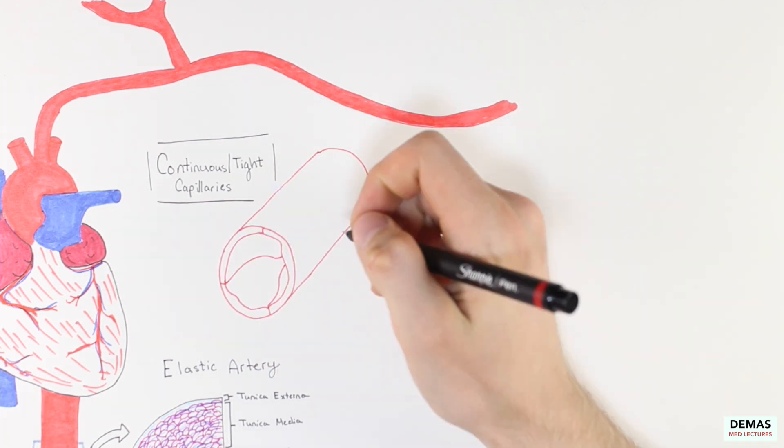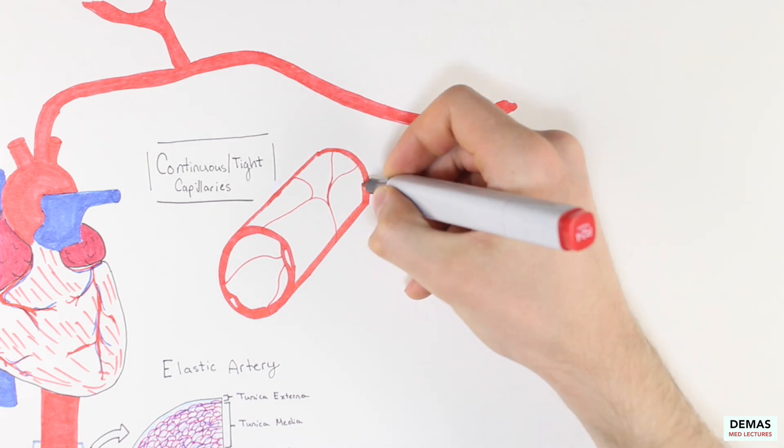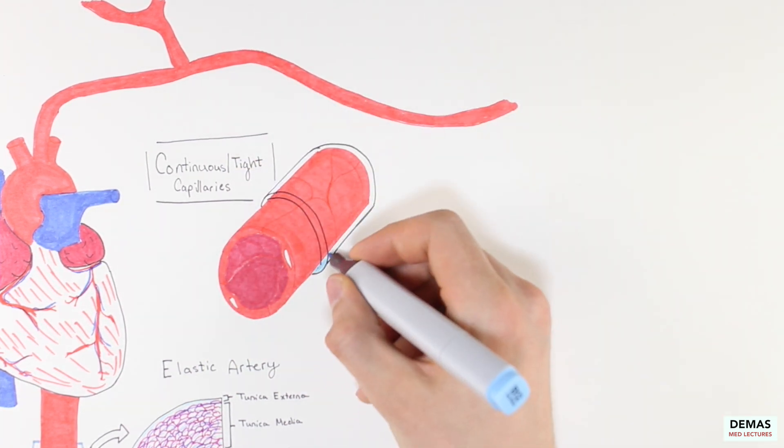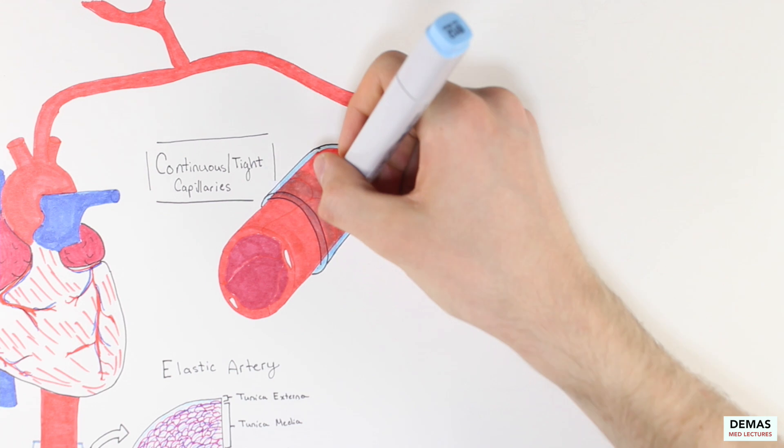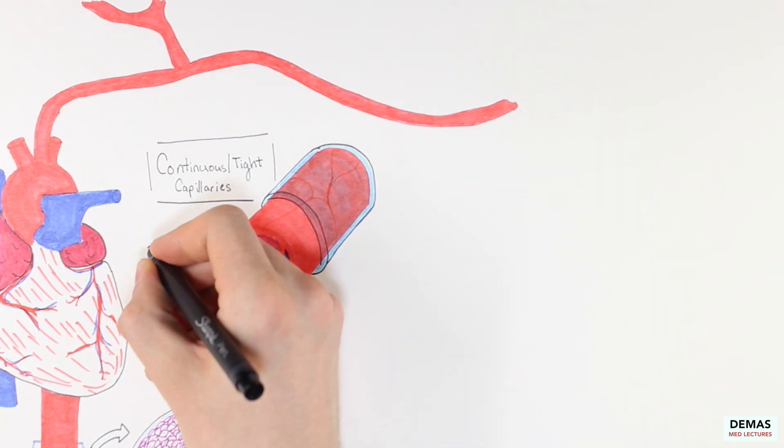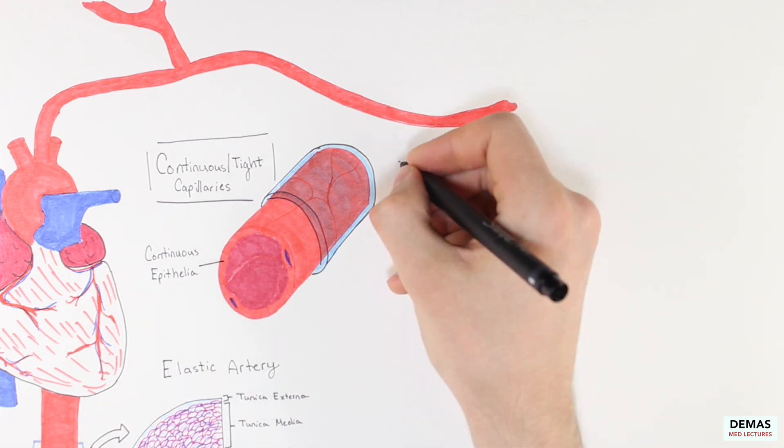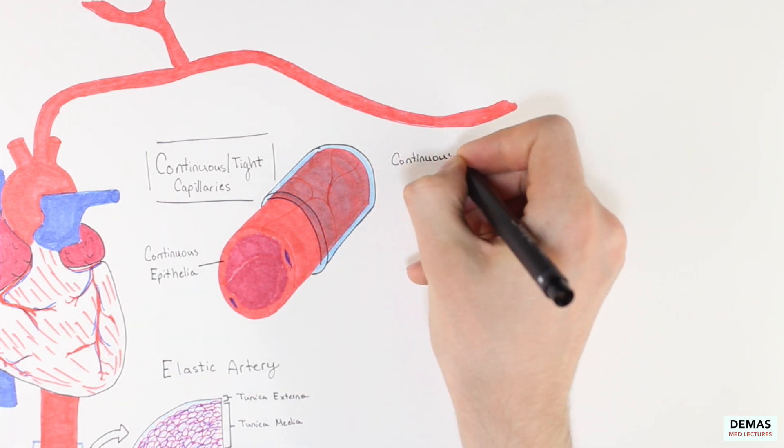Although all capillaries serve this function, they have different structure to accommodate the needs of the tissue they are integrated with. Let us take a closer look at continuous or tight capillaries. These capillaries consist of a continuous layer of epithelial cells with many tight junctions between these cells and a continuous basal lamina.